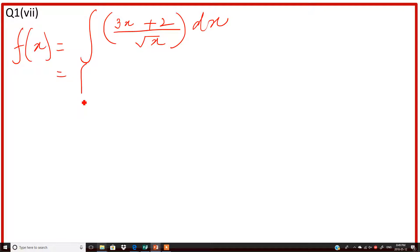So we will write this as integral of 3x by under root x plus 2 divided by under root x. This under root x will divide both.